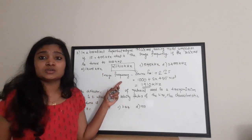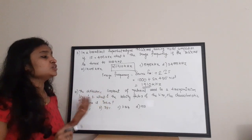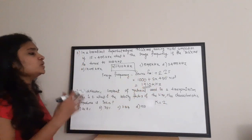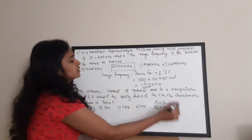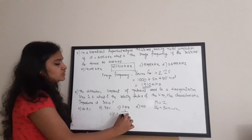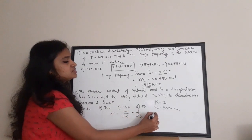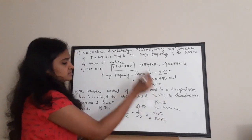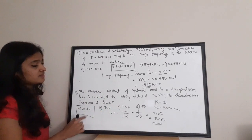The next question: the dielectric constant of a material used in a transmission line is 2, and the characteristic impedance Z₀ is 300 ohms. What is the velocity factor of the line? The velocity factor is given by Vf = 1 / √k, where k is the dielectric constant. So Vf = 1 / √2 = 0.707, or 70.7% when expressed as a percentage. The correct answer is Option A: 70.7%.